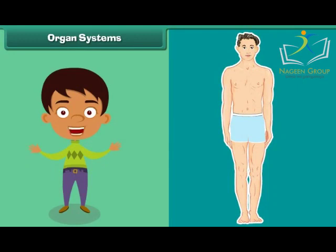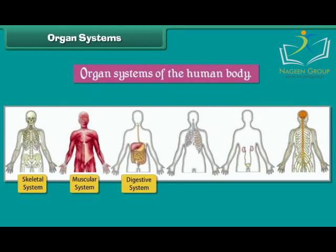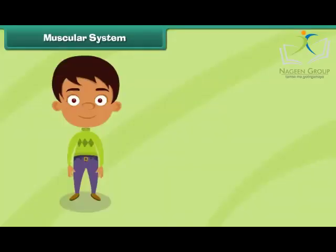The internal organs of the human body are grouped together to form different organ systems. Each organ system performs a special function. Some important organ systems of the human body are the skeletal system, muscular system, digestive system, respiratory system, excretory system, and nervous system. Let us now learn how each organ system works.